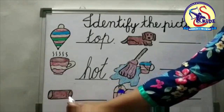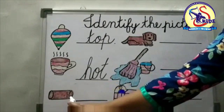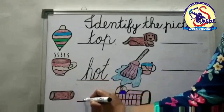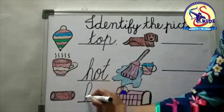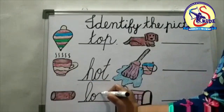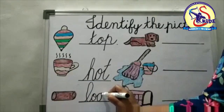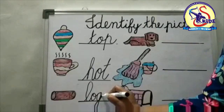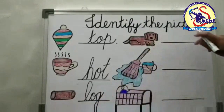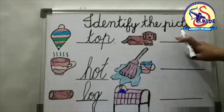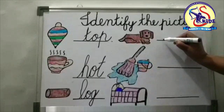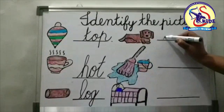Now see the next picture. What is this? This is a log. L-O-G, log. Now kids, see the next picture. What is this? This is a dog. D-O-G, dog.